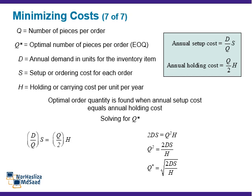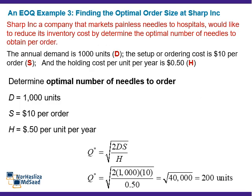The optimal order quantity is found when annual setup cost equals annual holding cost. In Example 3, finding the optimal order size at Sharp Incorporation: Sharp Incorporation, a company that markets pinless needles to hospitals, would like to reduce its inventory cost by determining the optimal number of needles to obtain per order. The annual demand is 1,000 units, the setup or ordering cost is $10 per order, and the holding cost per unit per year is 50 cents. Using these figures, we calculate the optimal number of units per order, which equals 200 units.